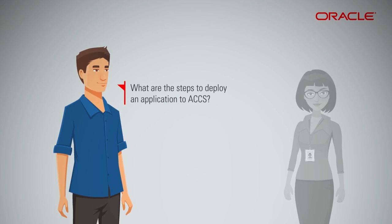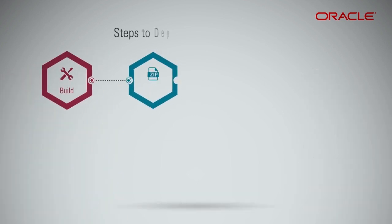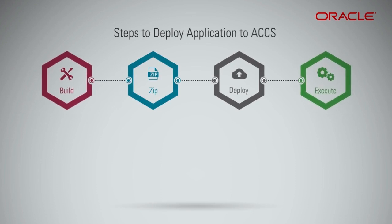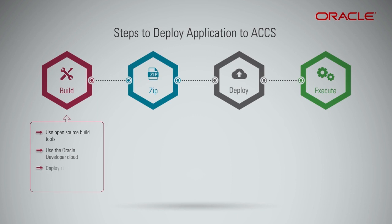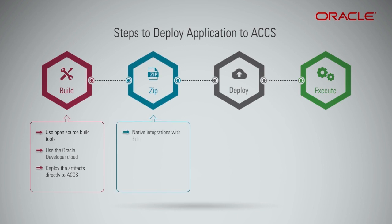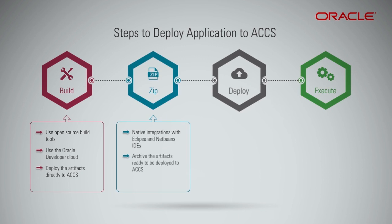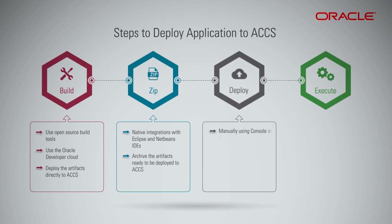What are the steps to deploy an application to ACCS? There are four steps involved. First, build the source code either locally using open-source build tools, or build using Oracle Developer Cloud and deploy the artifacts directly to ACCS. If building locally, there are native integrations with Eclipse and NetBeans IDEs to directly zip or archive the artifacts. The artifacts can then be deployed manually using the console or CLI, directly from the IDE with a push-button deploy, or integrated into a CI/CD pipeline like Developer Cloud Service. The artifacts must be deployed along with the templatized ACCS configuration file.